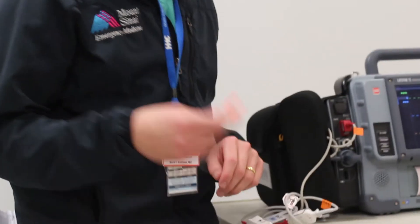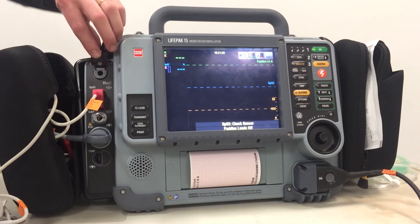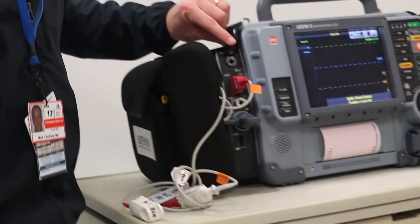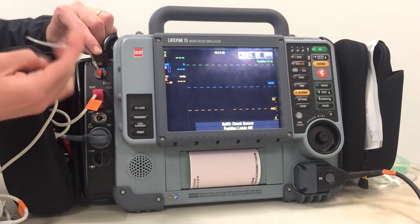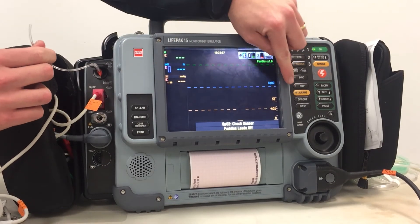We're also able to monitor end-tidal CO2 in line with the ET tube. In the upper right here, you screw in the orange port, give it a half turn clockwise, and the trace is going to come up immediately.